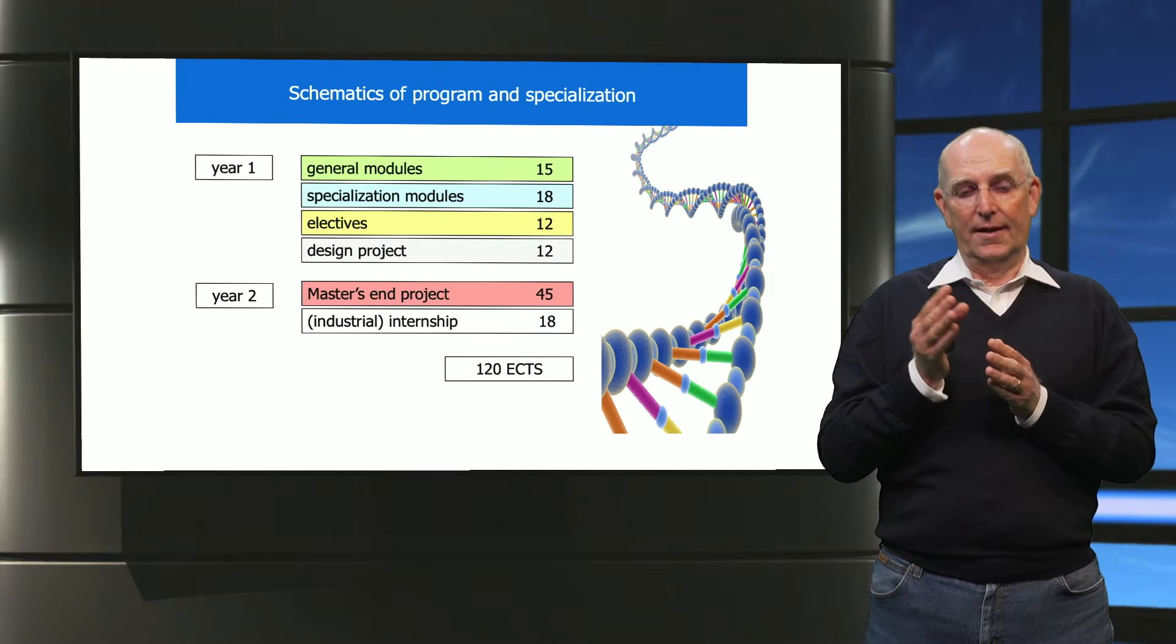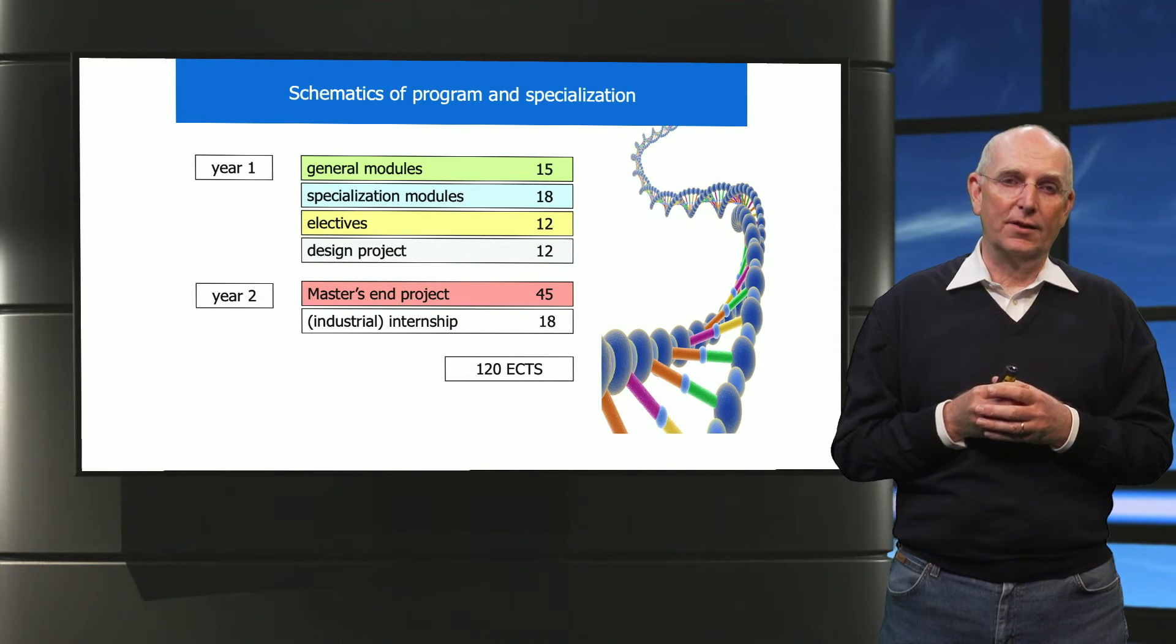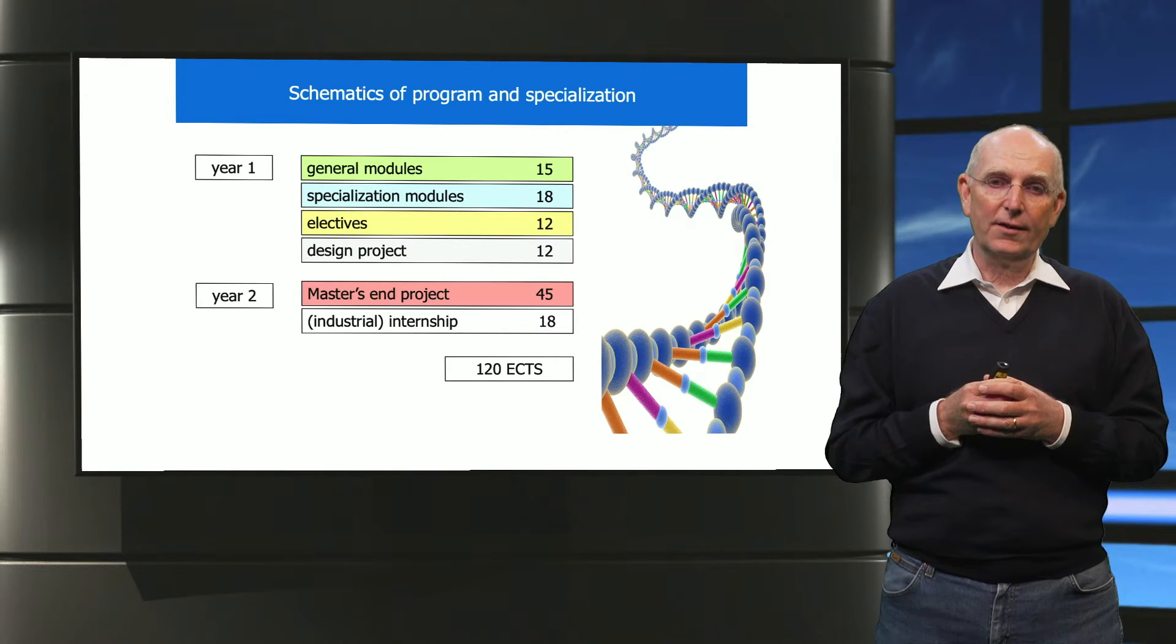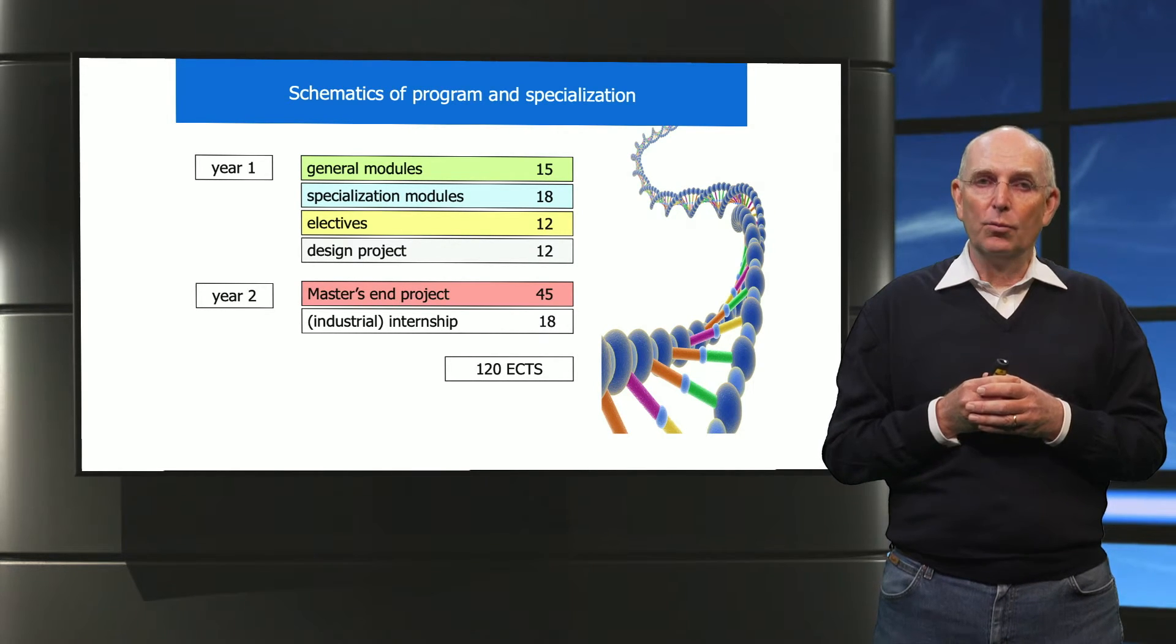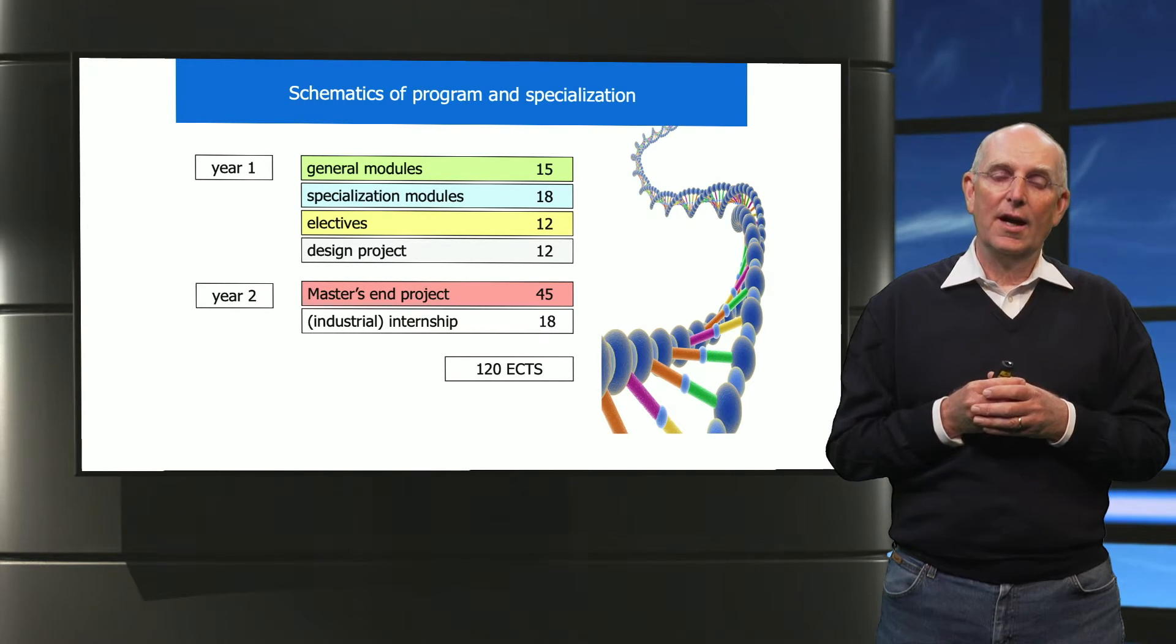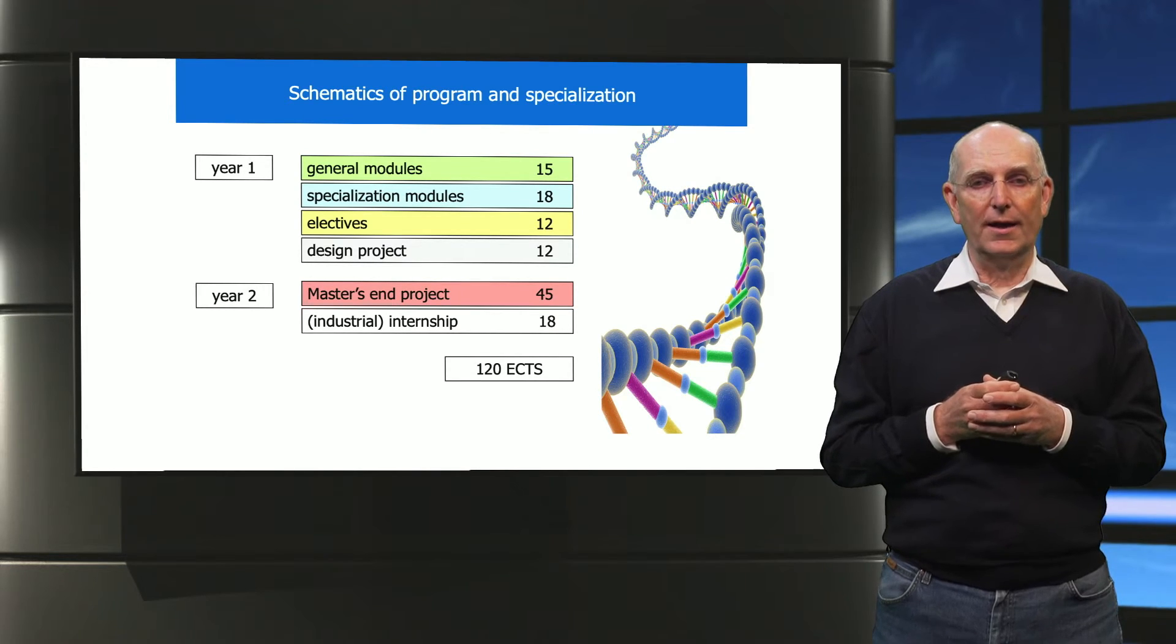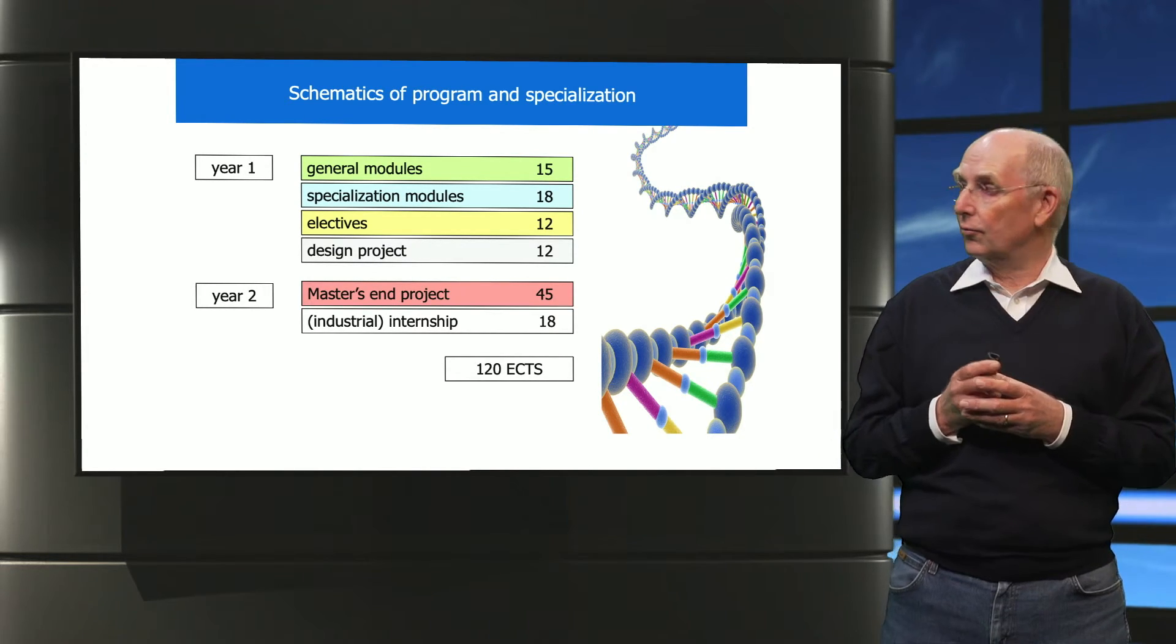In the second half of your education, the second year of the master education, you do a practical project within one of the research groups of the department based on the chosen specialization, and you follow an industrial internship to see how you can apply your knowledge in industry.